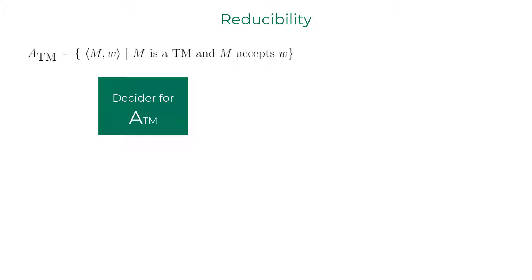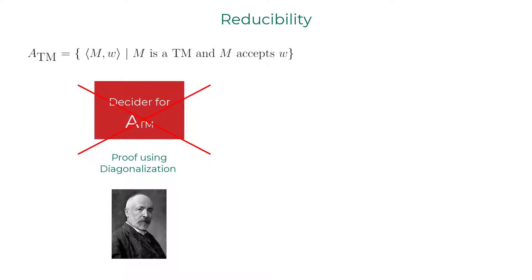The same logic can be applied for proving undecidability of certain languages. As we establish that the language ATM, the acceptance problem of a Turing machine, is undecidable using diagonalization technique. A decider for ATM does not exist.